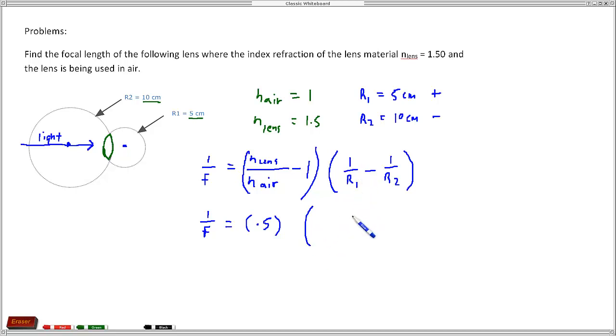So we have 5 centimeters but it's a positive 5 centimeters, and because the sign applies to R1, you've got to keep in mind that 1 over R1 is going to have the same sign as R1. So in this particular case we've got 1 over 5 centimeters, and it's minus the 10 centimeters but the sign for the 10 centimeters is minus. So it's minus 1 over 10 centimeters.